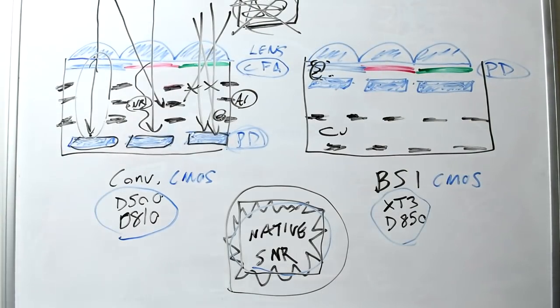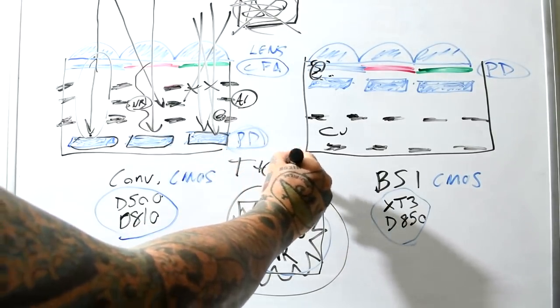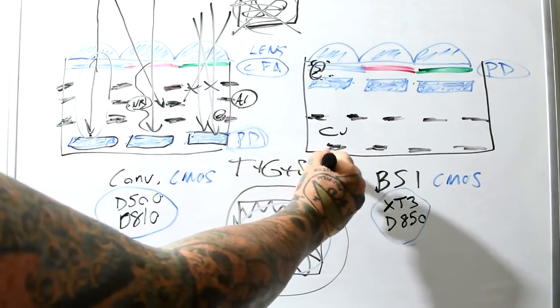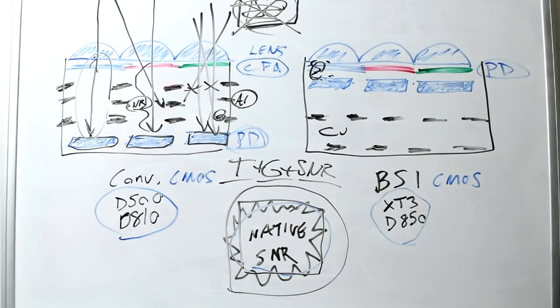There's three branches of exposure. There's time, and gain, and SNR. These are the three branches of exposure in digital photography. Time, of course, shutter speed. Gain, of course, is aperture. And SNR is signal-to-noise ratio. Native SNR is insanely important.